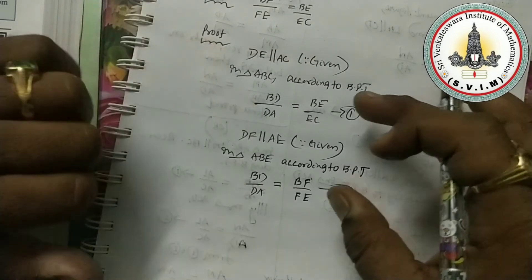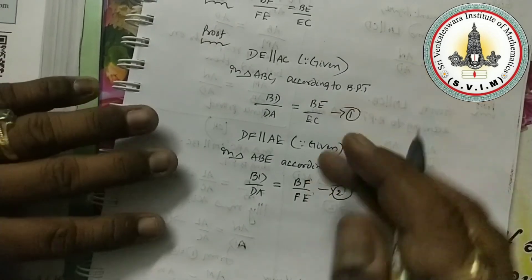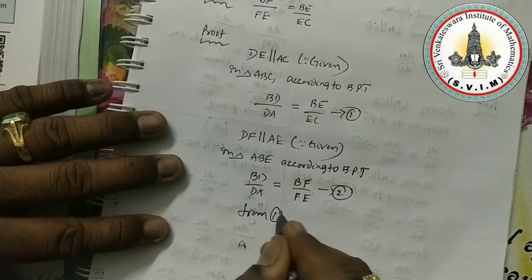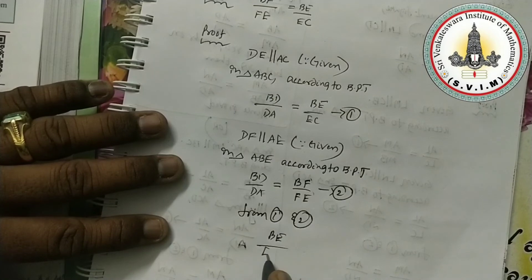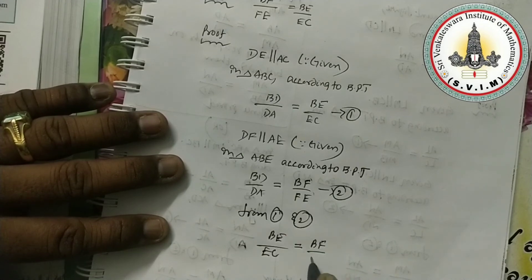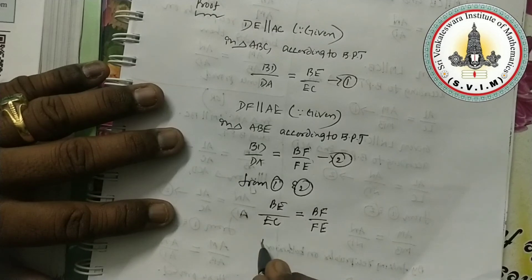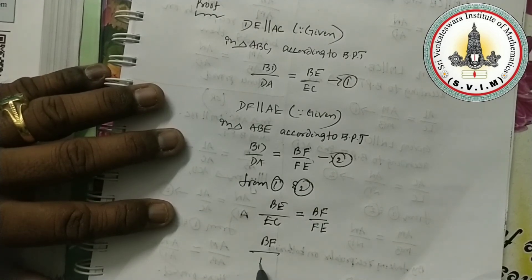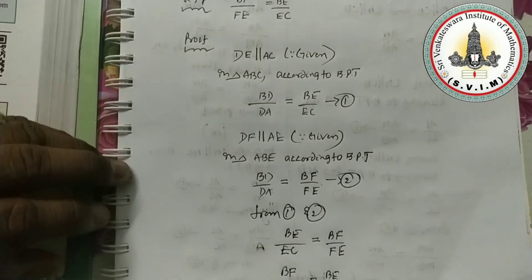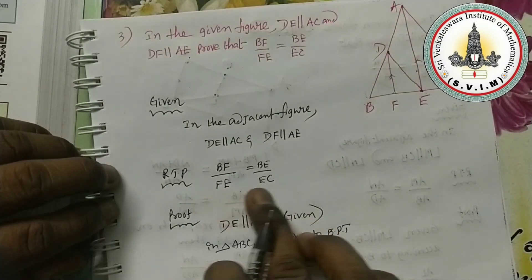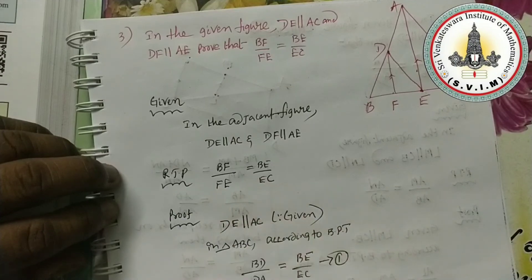In equations 1 and 2, the respective left-hand side parts are equal. So from 1 and 2: BE by EC is equal to BF by FE, which can be written as BF by FE is equal to BE by EC. This is exactly what we needed to prove. Hence proved.